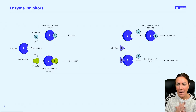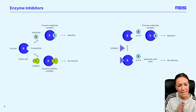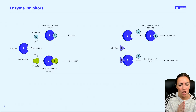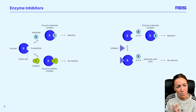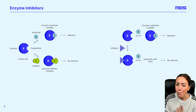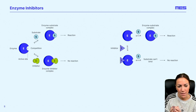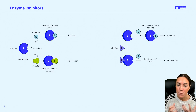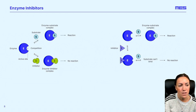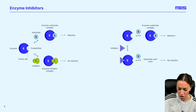Let's start by going through the two different types of enzyme inhibitors, making sure we're really happy with how these work. And then we're going to look at how we can differentiate between them in an experimental situation.